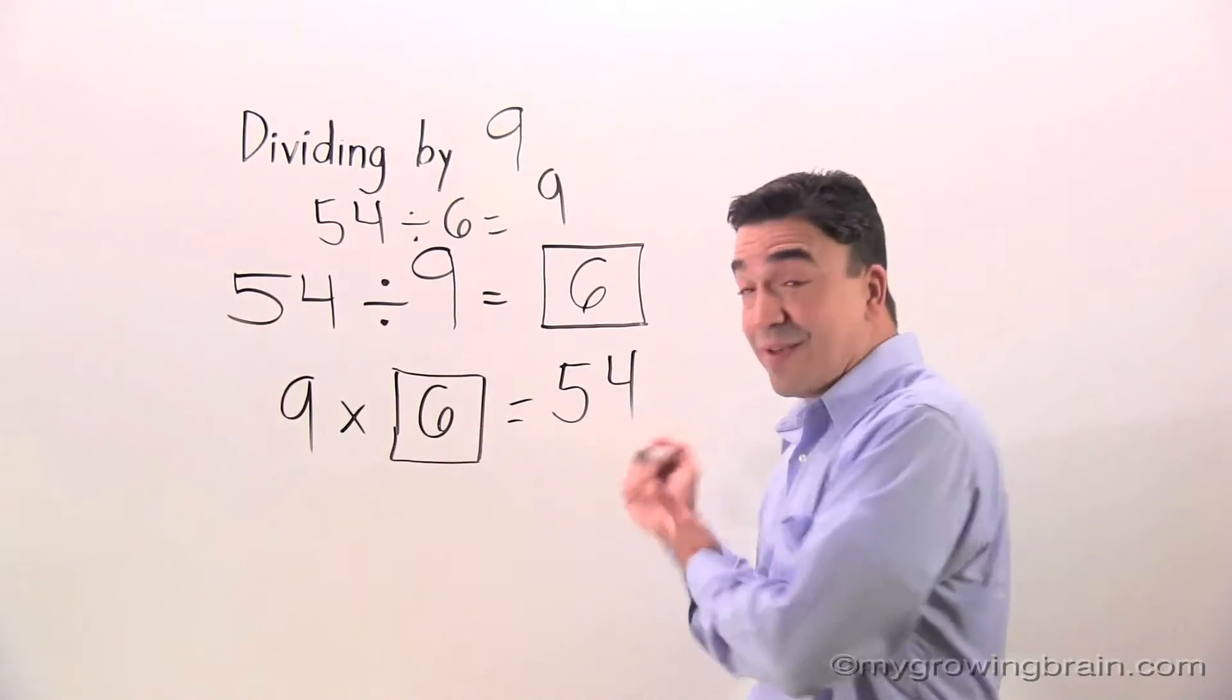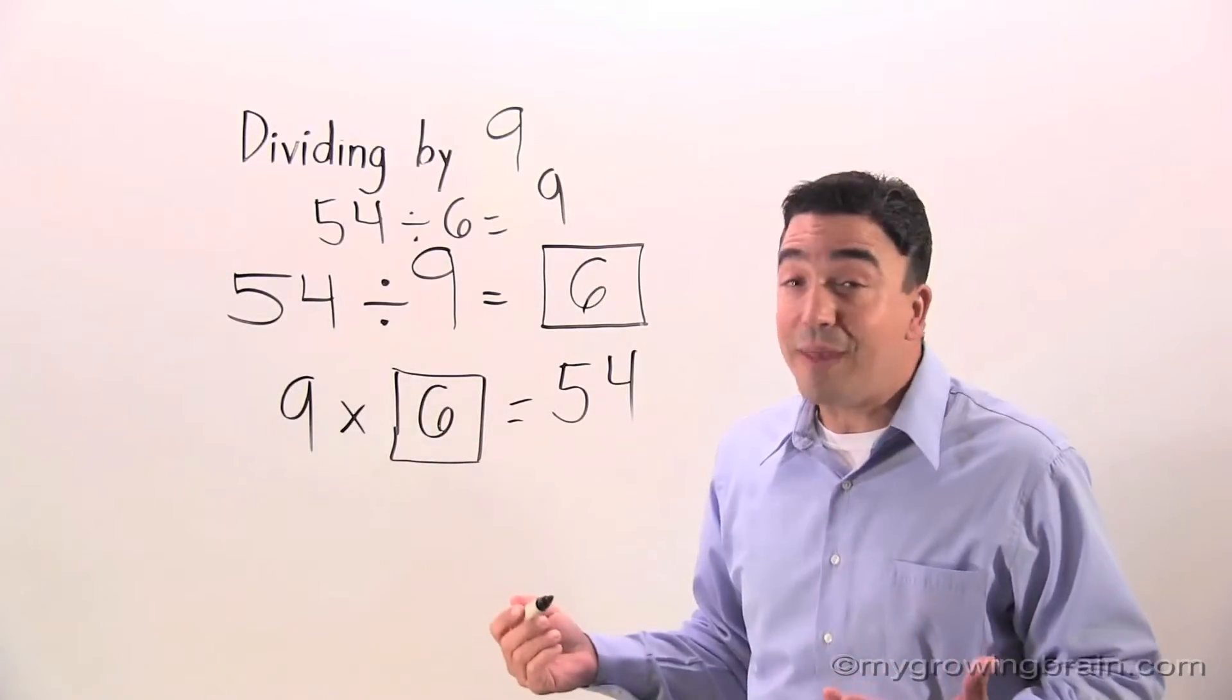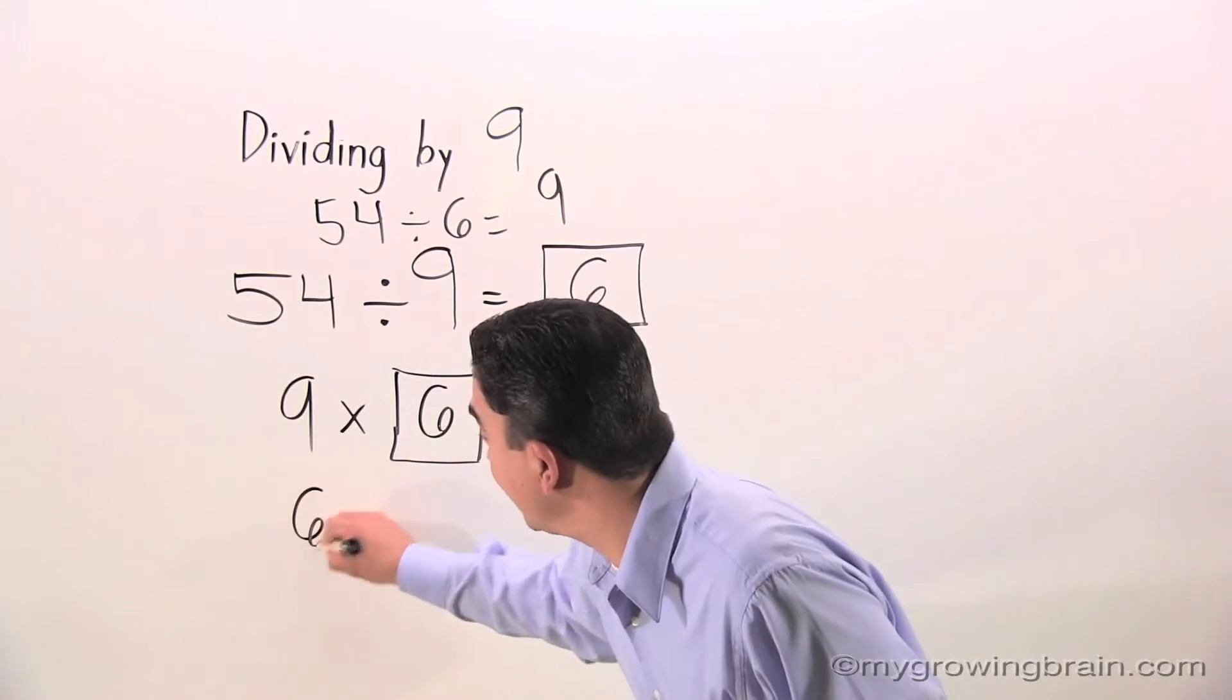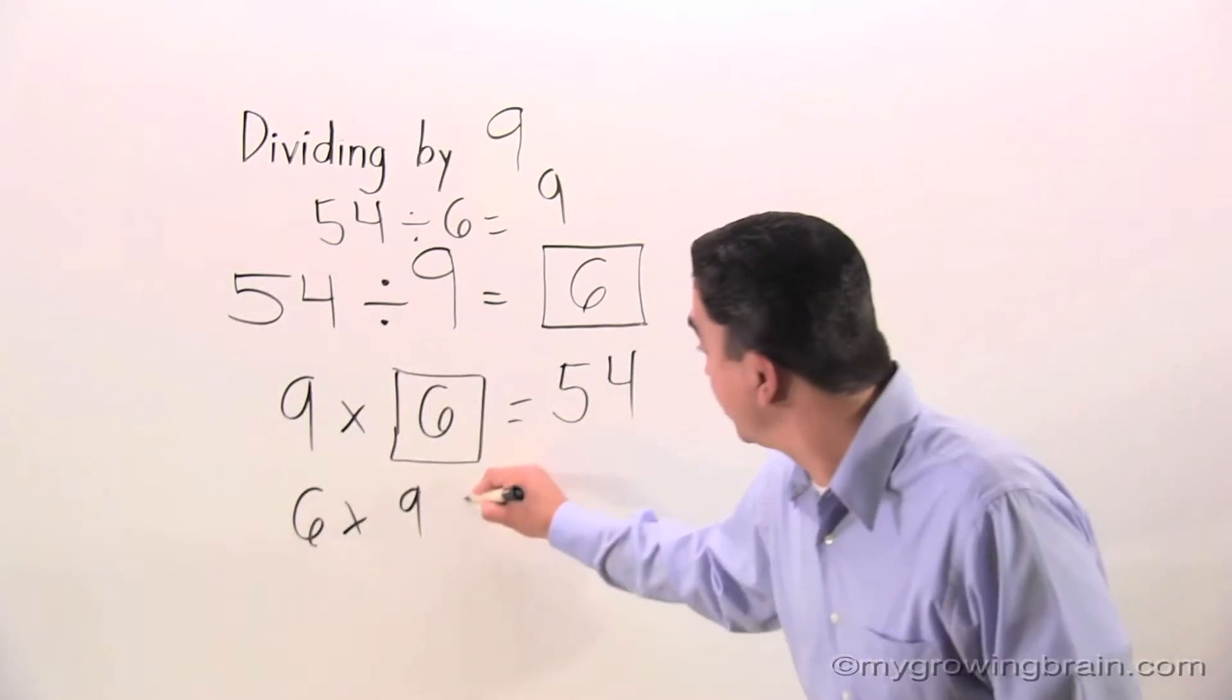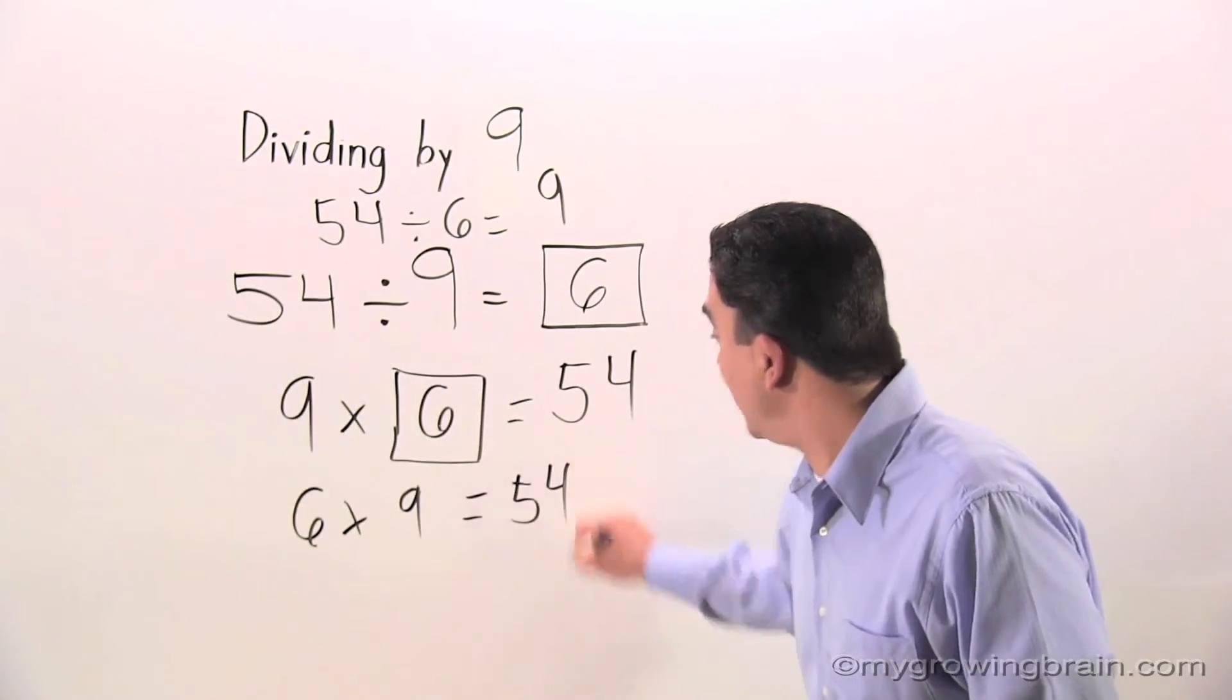And if 9 times 6 is equal to 54, then guess what, people? 6 times 9 is equal to 54.